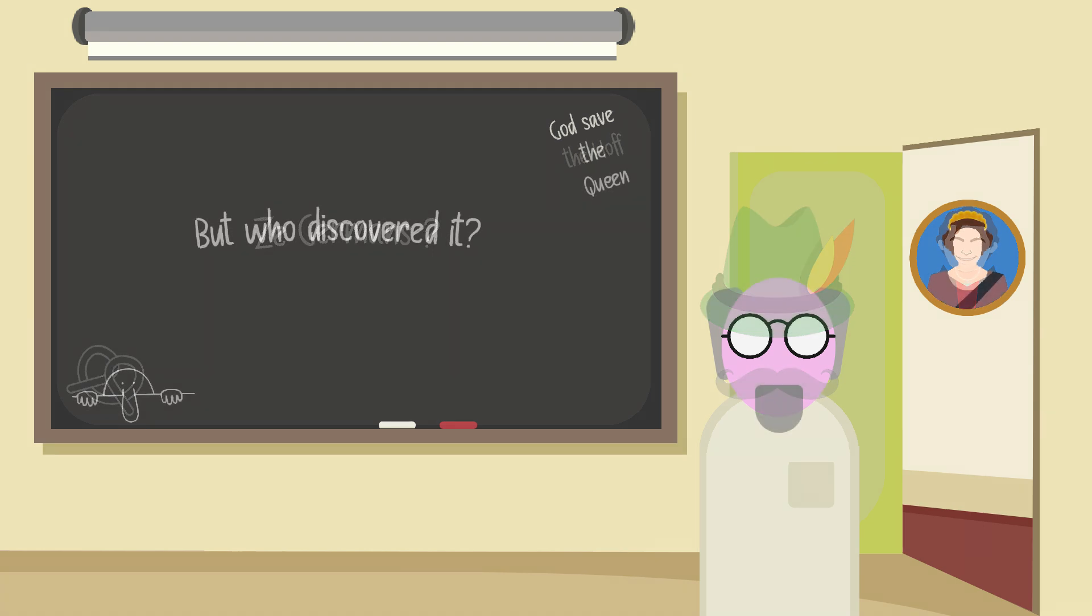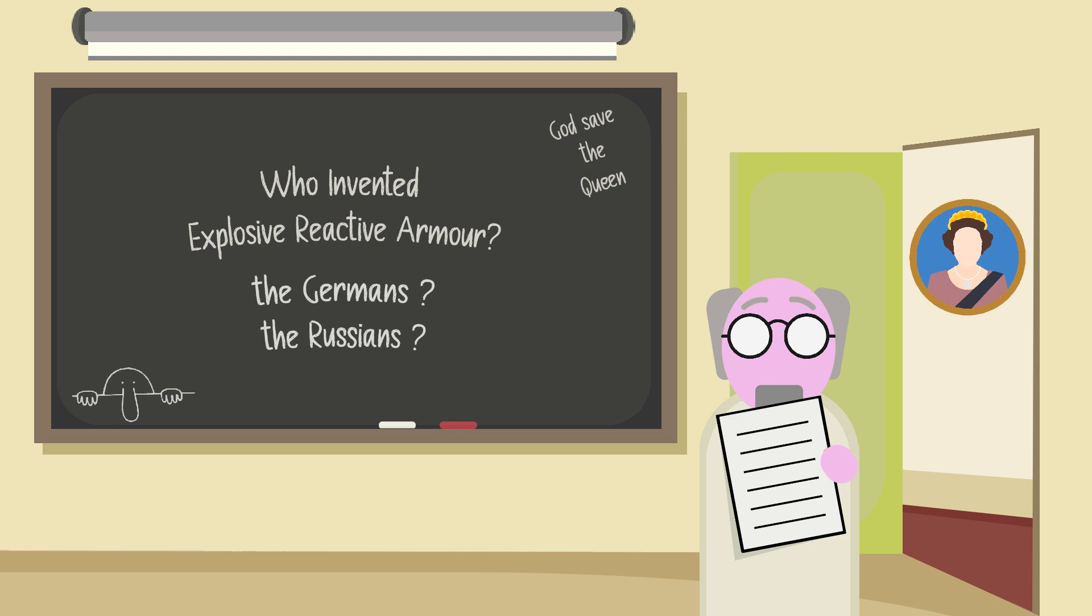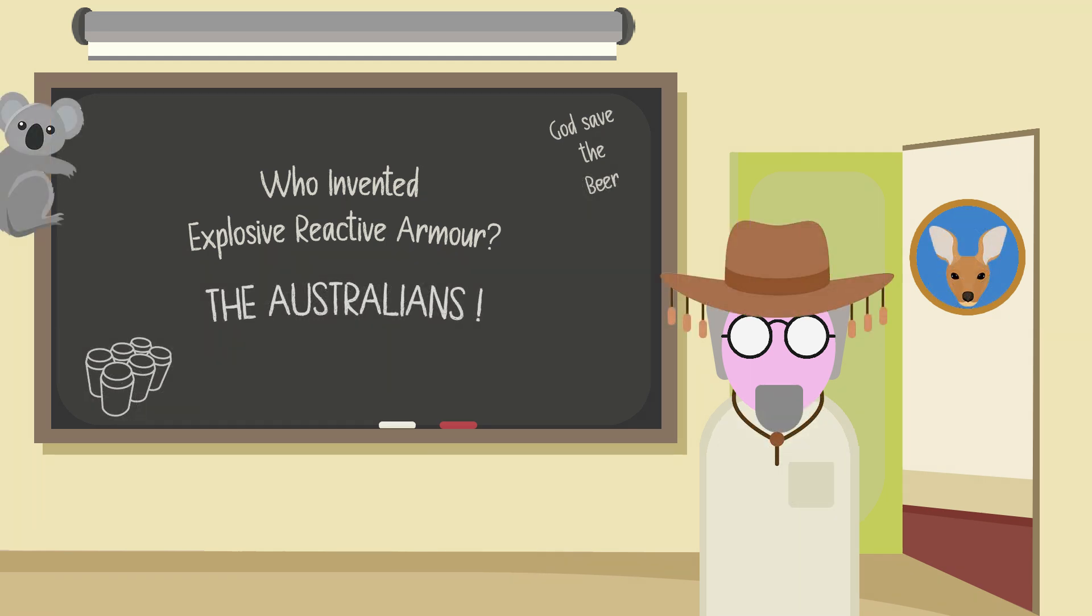Today, both sides take credit for the discovery of the system, and both of them are wrong. The actual discovery can be traced back even earlier to the most unlikely of places: Australia at the Maribyrnong explosives factory in 1944.